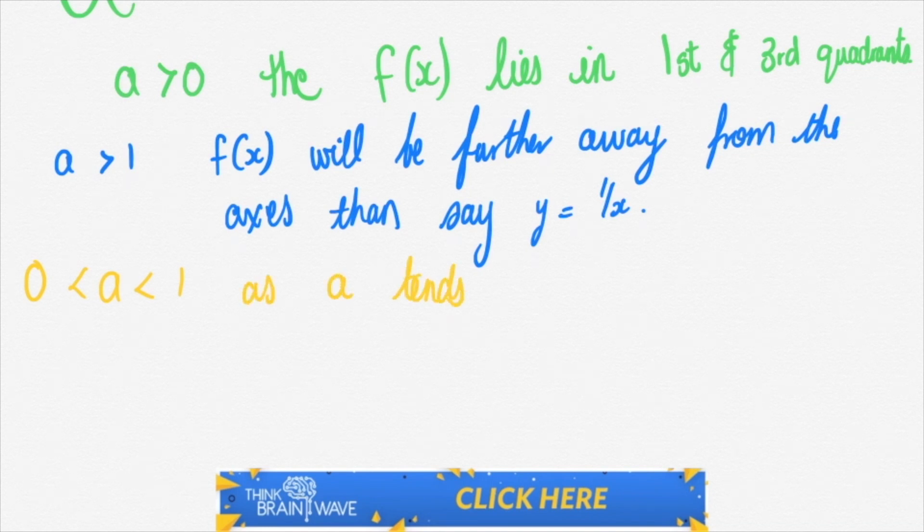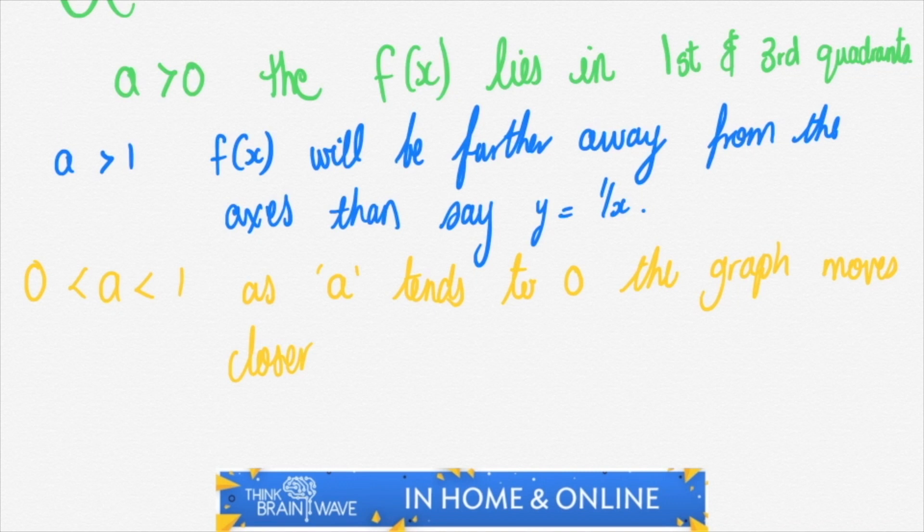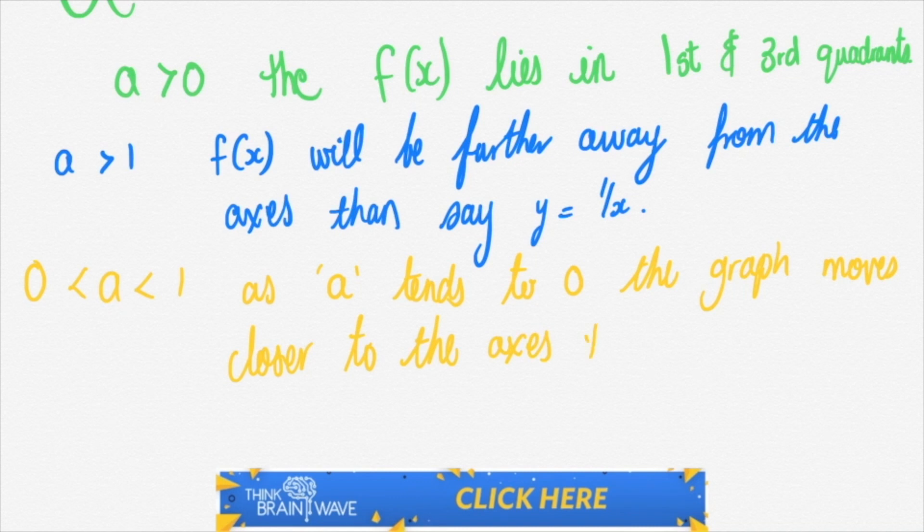Now when a is between 0 and 1, we say that as a tends towards 0, the graph then moves closer to the set of axes rather than 1 over x.